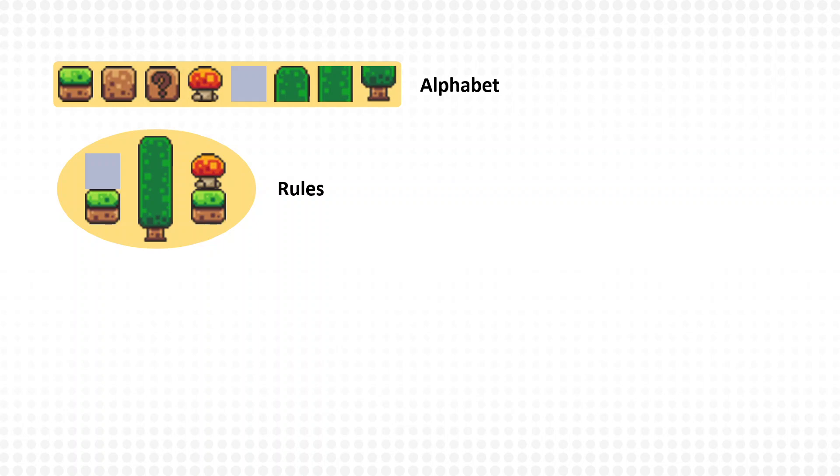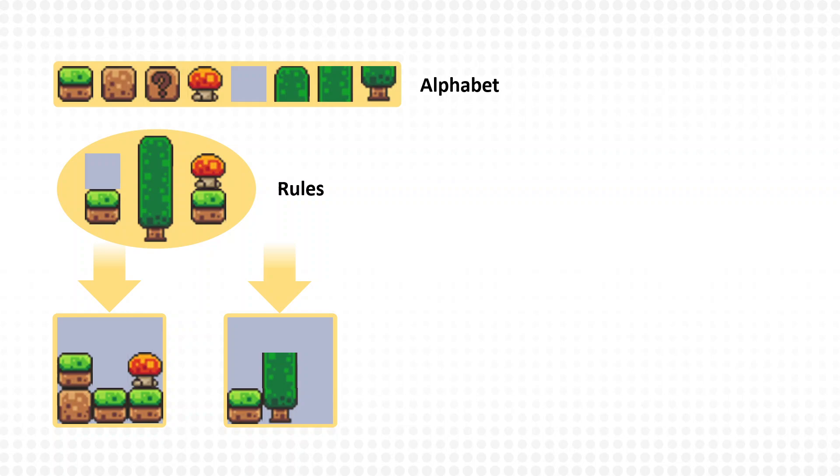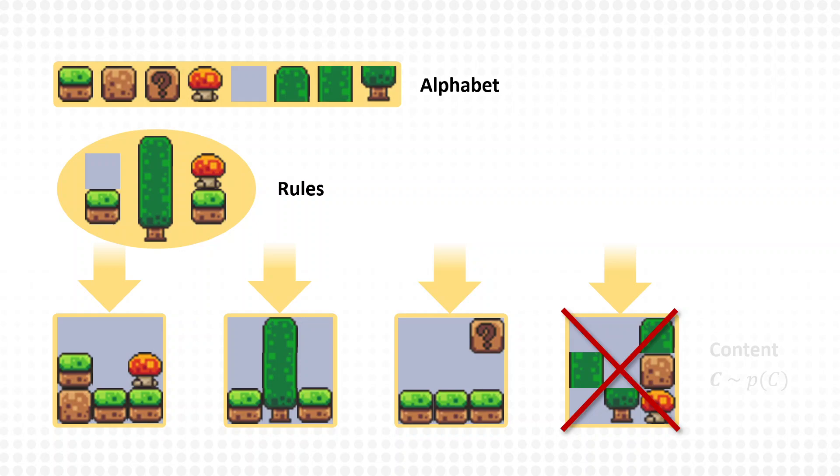Using the alphabet and the rules, procedural content generation can be understood as drawing random sample images from a probability distribution of all possible images, where images that violate the rules have a probability of zero to be drawn.